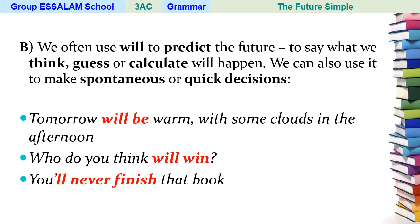We often use 'will' to predict the future — to say what we think, guess, or calculate will happen. We can also use it to make spontaneous or quick decisions. For example: 'Tomorrow will be warm with some clouds in the afternoon' (a guess), 'Who do you think will win?' (thinking/prediction), and 'You'll never finish that book.'